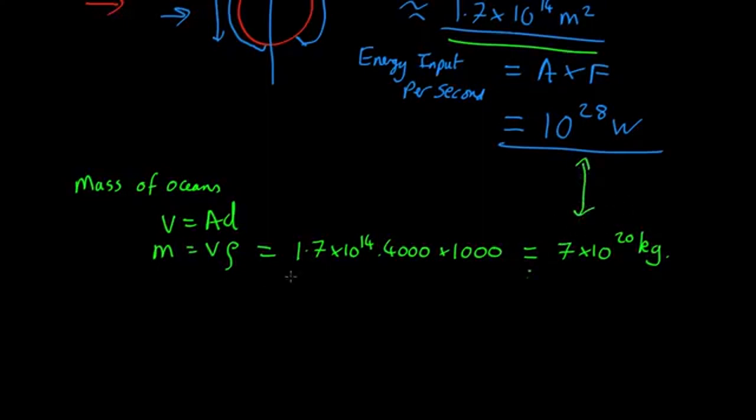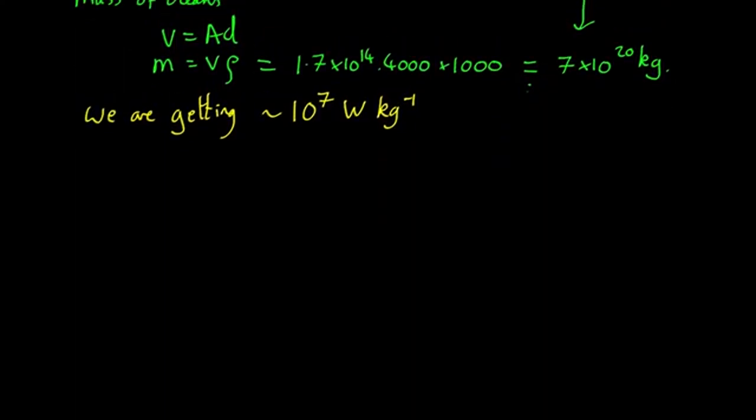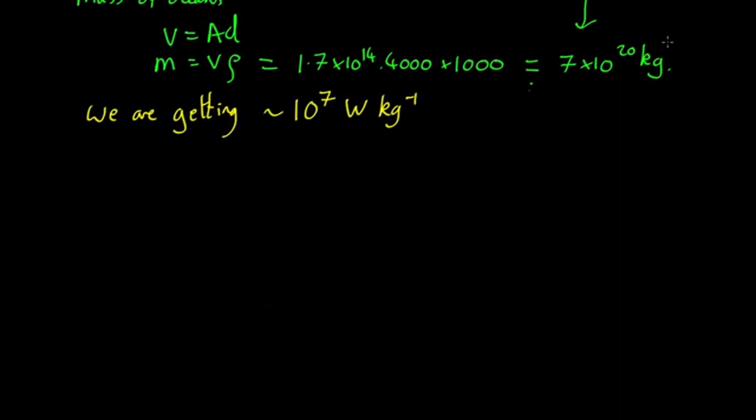If you compare these two numbers, we're getting about 10^7 watts per kilogram of ocean. So 10 million joules of energy every second to every kilogram. How much will that warm the ocean up? We know that to increase the temperature by an amount ΔT, the energy needed is equal to the mass times ΔT times the specific heat capacity of whatever you're warming up. In this case, for water, that's about 4,200 joules per kilogram per degree.